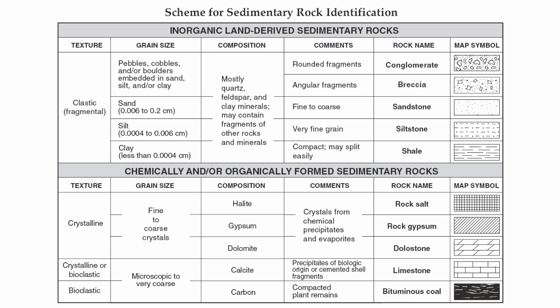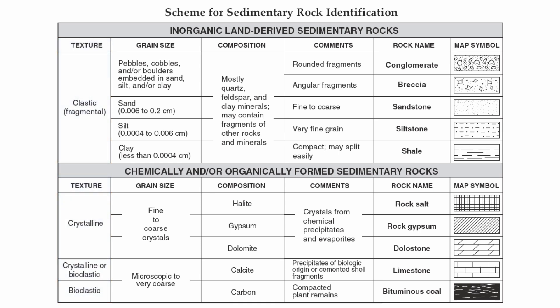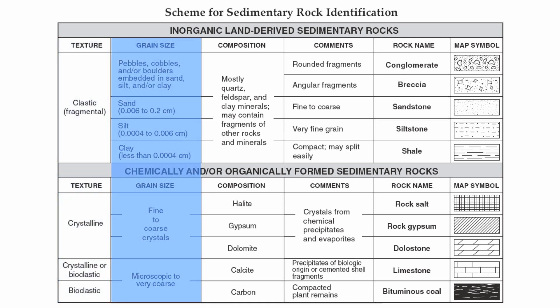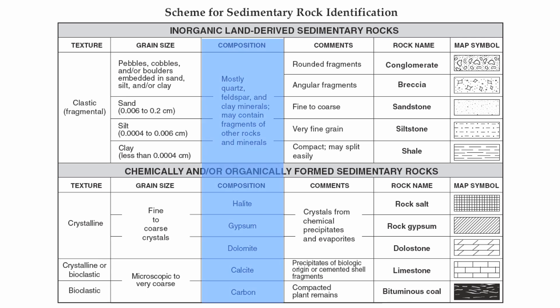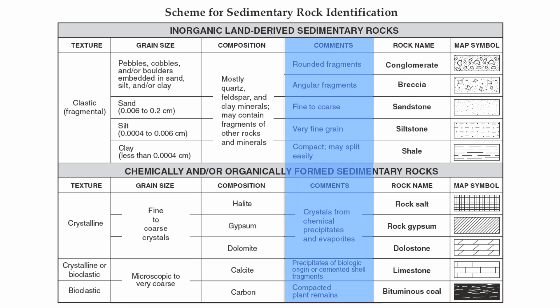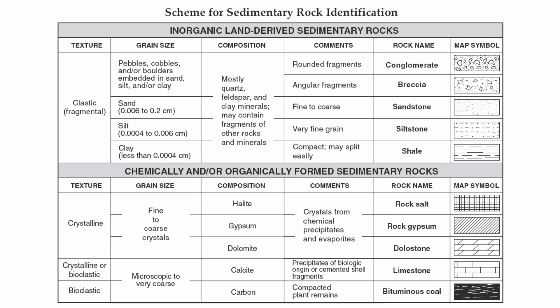Let's take a look at the categories you're going to get information about. First is texture — clastic, crystalline, or bioclastic — describing how the rock actually forms. Then you get grain sizes, which could be the size of the fragment glued together or the size of the crystal in crystalline rocks. Composition tells you the mineral or minerals that make up an individual rock. The comments section is very important because it gives you distinguishing characteristics about that rock. Then you have the rock name, and finally a map symbol.